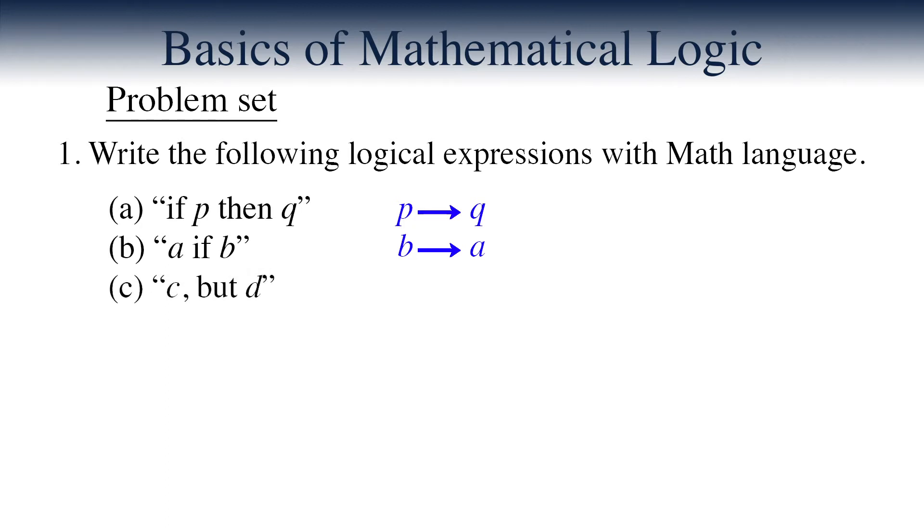Expression C says, C but D. This means that C is true, but also D is true. So it's about the addition of information. We write C and D.